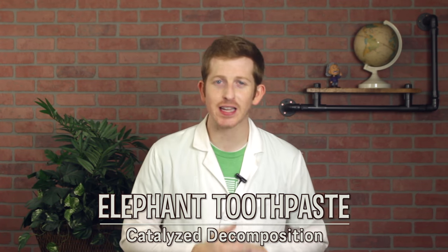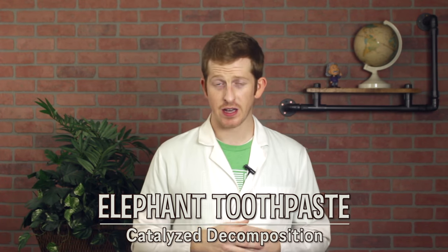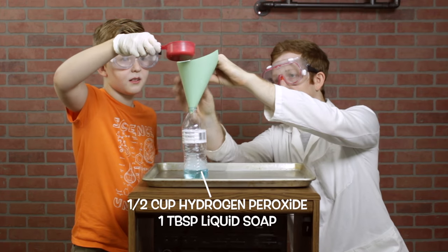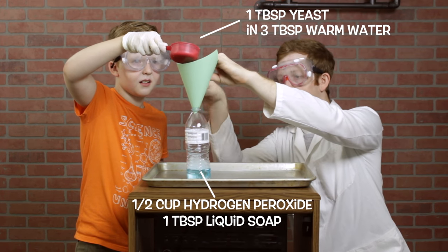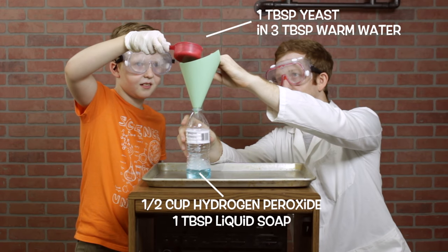Elephant toothpaste is a classic chemical reaction. A household version of it uses yeast. Remember, yeast is a living thing. It's a fungus. You can wake up these sleeping critters with three tablespoons of warm water and let them feed it on half a cup of hydrogen peroxide.